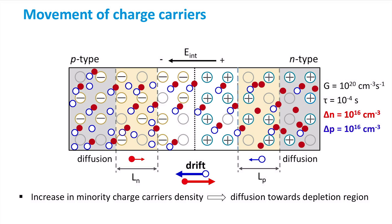In general, only the photo-generated minority charge carriers that are within the diffusion length from the depletion region edge will be drifted across the depletion region. Ln is the diffusion length of electrons in the P-type region and Lp is the diffusion length of holes in the N-type region. The minority carriers generated far away from the edges of the depletion region will recombine before reaching the depletion region.